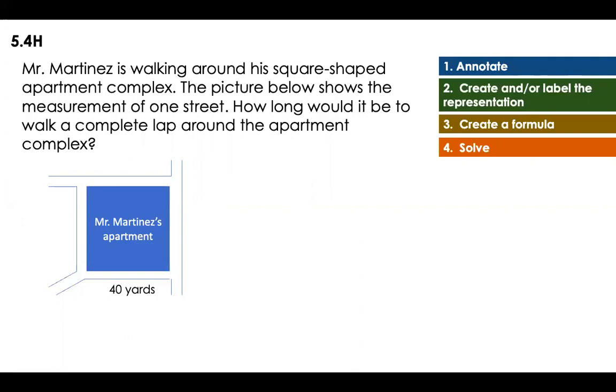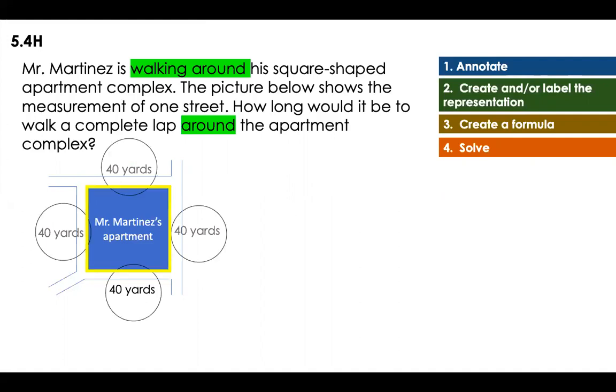So, that means that if one street is 40, that means that the other streets are 40. In this case, the word walking around is what is telling me that I will have to find the perimeter. So, now, I am just labeling this representation. I'm putting the circles because I'm working with them. I'm putting the adding symbols because I know that I'm putting them all together. Now, whenever we talk about the formula, the perimeter of a square is 4 times S. So, S, in this case, is one side. So, that means that it's going to be 4 times 40 yards.